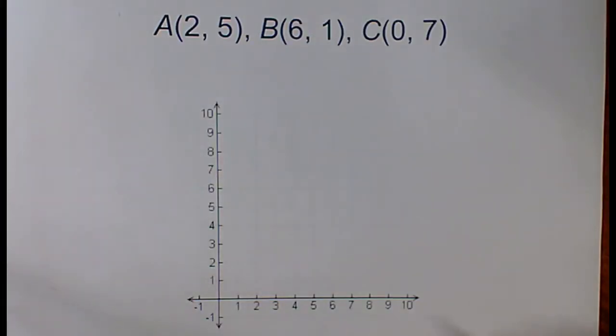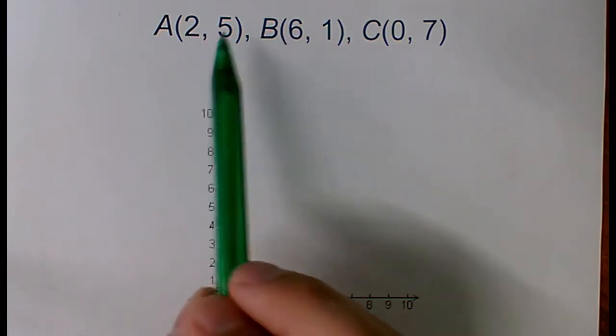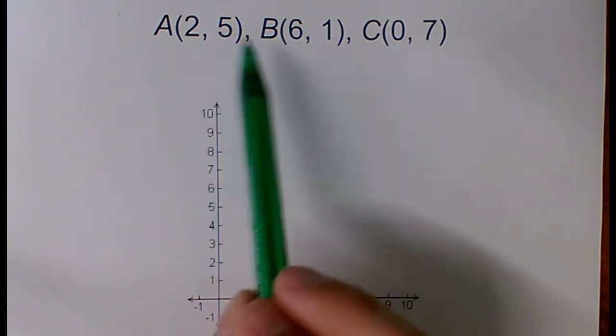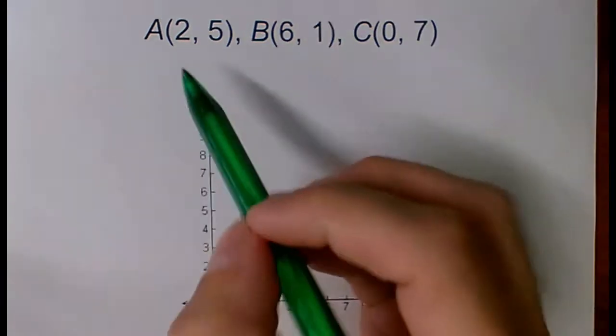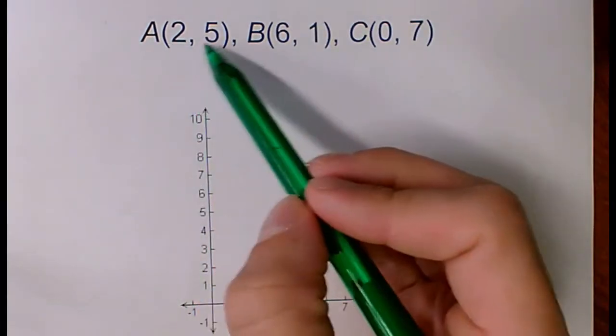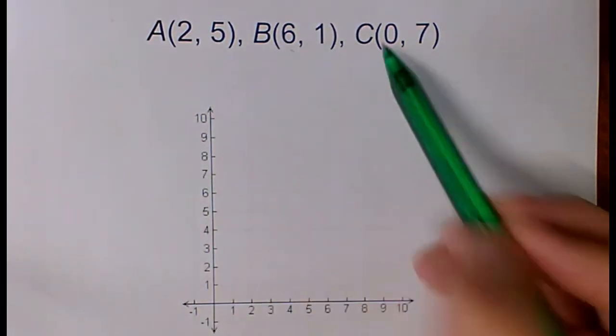All right. Graphing points on just quadrant one of a coordinate plane. Quadrant one means all of my ordered pairs are going to be positive X value, positive Y value. Your first number tells you where you go left or right. In all of these cases, I'm going to go right.